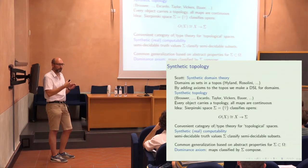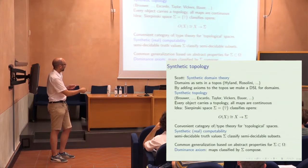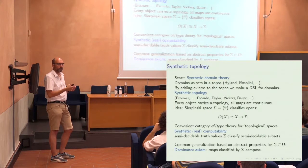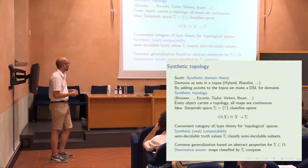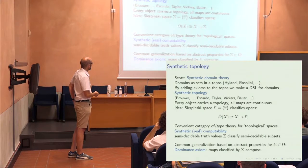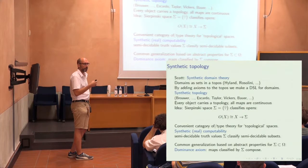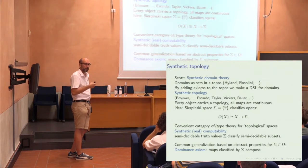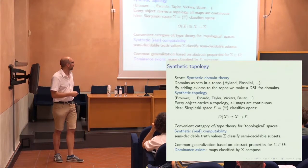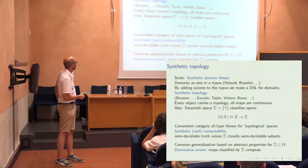The semi-decidable truth values are elements of the sub-object classifier. Sigma will be a subset of the sub-object classifier such that you can, in a countable way, decide whether something is true. What is important is the dominance axiom. Because sigma is a subset of the sub-object classifier, it classifies a collection of monos. The dominance axiom says you actually get a category of such monos — such maps compose. This was isolated by Rosolini in the setting of synthetic domain theory.